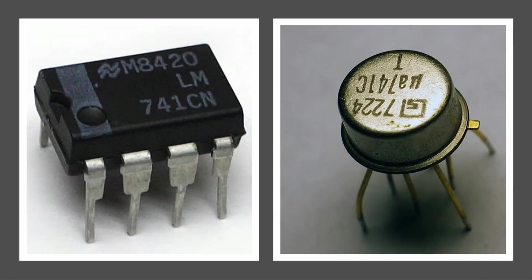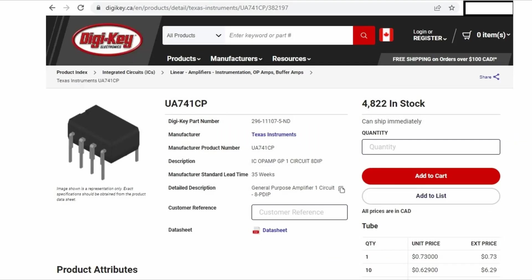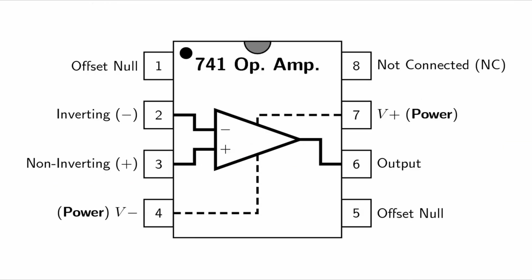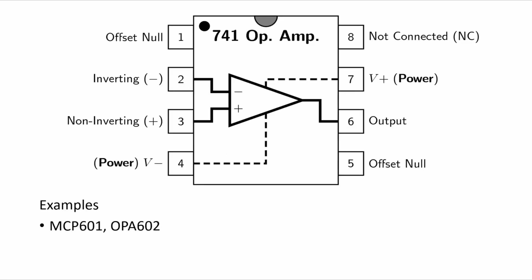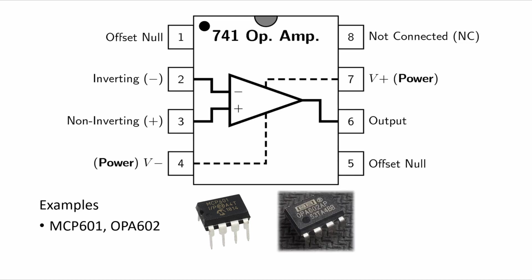In 1968, Fairchild released the MU-A741 op-amp. This is perhaps the most popular op-amp of all time and despite having relatively poor performance compared to more recent designs, it is still sold in 2022 when this video was made, as you can see from this digikey website. The pinout of the 741 has become a de facto standard and many modern op-amps use the same pinout, with examples including low-cost op-amps like the MCP601 from Microchip and high-speed precision op-amps like the OPA602 from Texas Instruments.